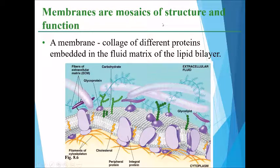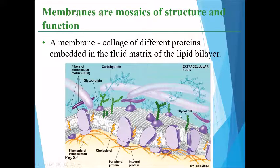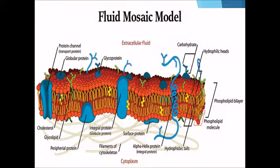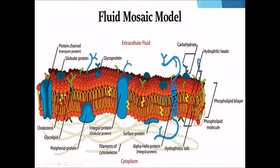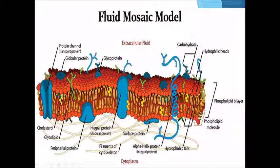Plasma membranes are a mosaic of structures and functions, with different proteins embedded in the fluid matrix of the phospholipid bilayer. The fluid mosaic model includes two types of proteins — integral proteins and peripheral proteins — as well as cholesterol wedged between the phospholipid bilayer, carbohydrates attached to proteins known as glycoproteins, and carbohydrates attached to lipids known as glycolipids.